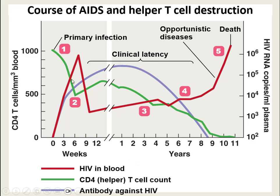During clinical latency, we continue to make antibodies, but after a while those antibodies will go away. The white blood cells will start to rebound a little bit, but during those years they're eventually going to slowly start to decline. The number of viruses will slowly start to go up again as the antibodies decrease — the thing attacking them starts to go away.